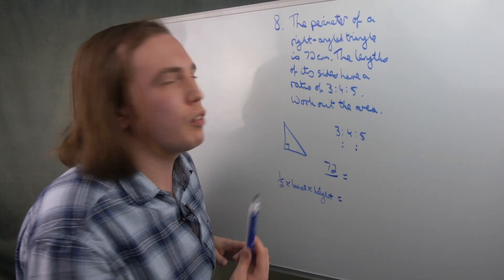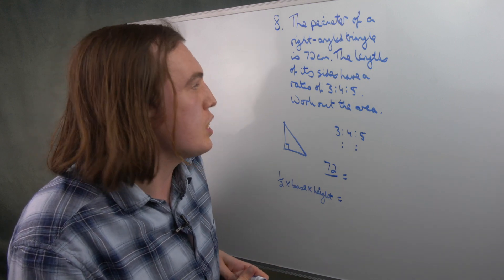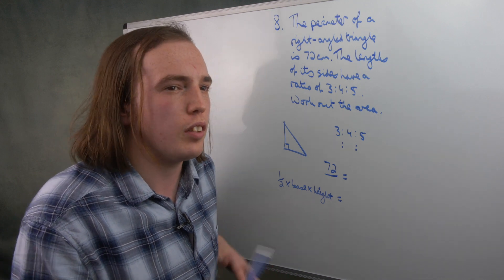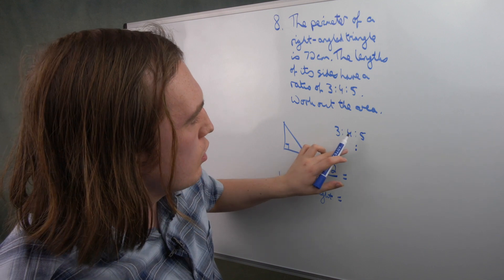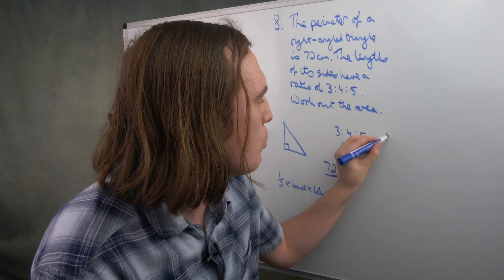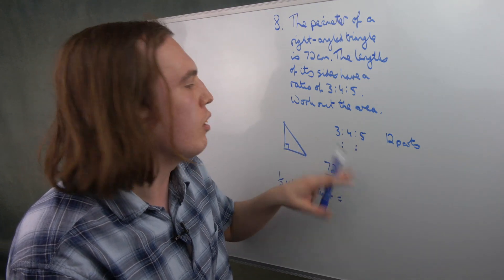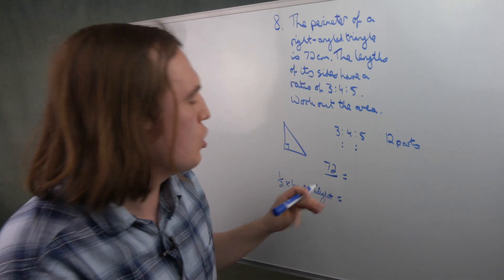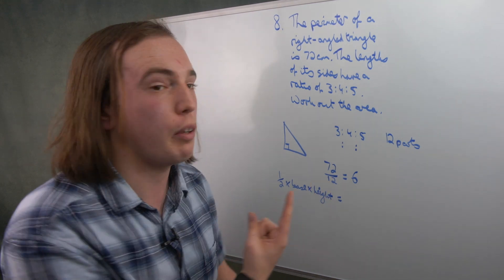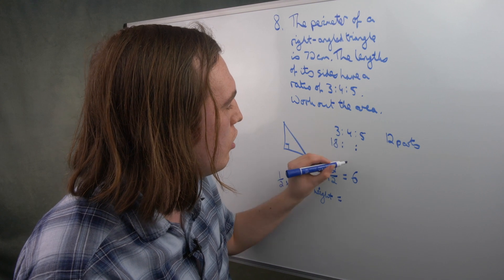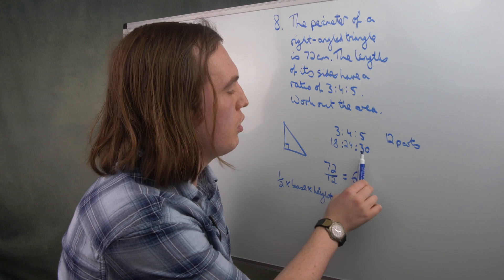Question 8 tells us that the perimeter of a right-angled triangle is 72 centimetres, and the lengths of its sides have a ratio of 3 to 4 to 5. We want to find the area. If the ratio is 3 to 4 to 5, the total is 12 parts. So 72 divided by 12 equals 6, meaning every one part represents 6. Therefore 3 times 6 is 18, 4 times 6 is 24, and 5 times 6 is 30. Check: 18 plus 24 plus 30 equals 72. ✓